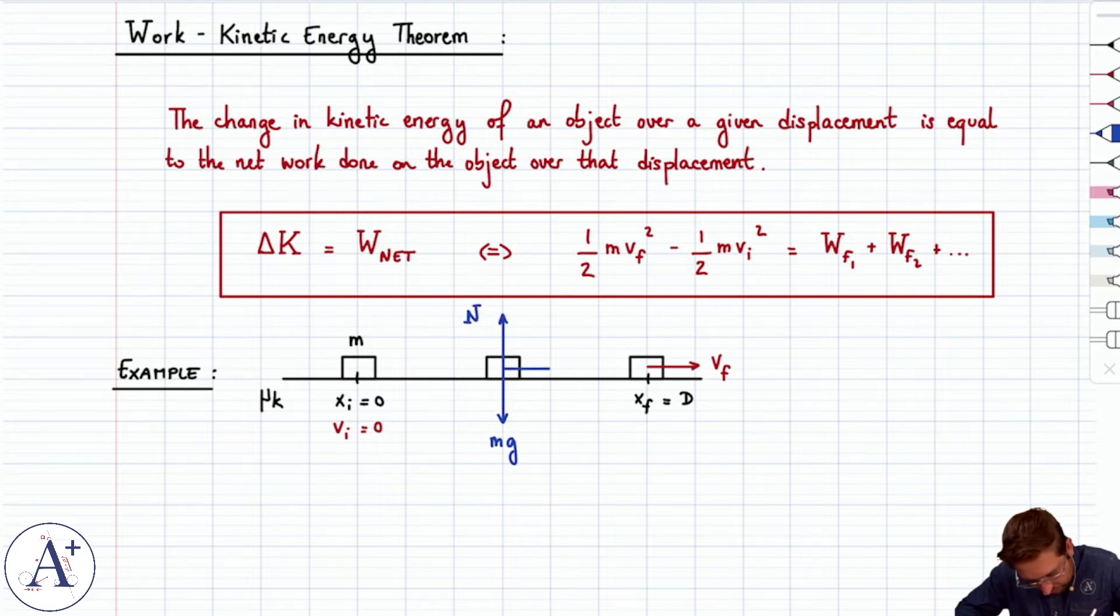The force pulling it, we'll call it capital F, we'll assume that capital F is well behaved, it is constant in magnitude and direction, always points to the right, constant magnitude. And then there's kinetic friction, always points opposite the direction of motion, and kinetic friction is constant as long as the normal force is constant.